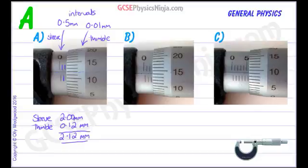Let's do the next one. So we've got a half showing, 1, 1 and a half, 2, 2 and a half is just showing. So that's the sleeve reading, 2.50 millimeters.